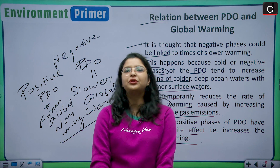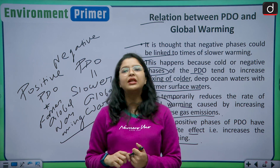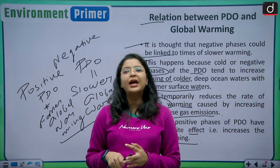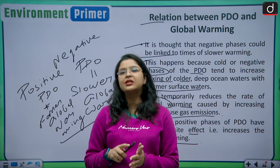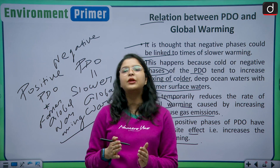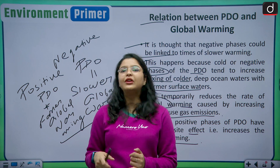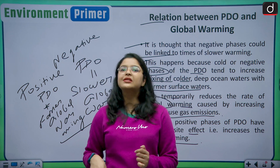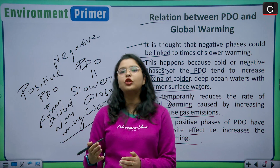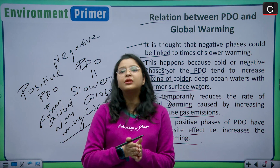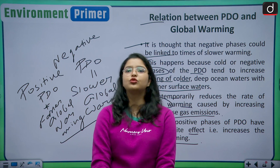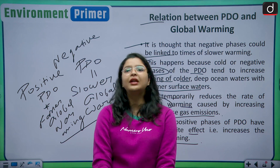With this we come to the conclusion of today's discussion. We have seen the phenomenon of the Pacific Decadal Oscillation, its two phases — cooler and warmer — the relationship between ENSO and PDO, the relation of PDO with global warming, and how the two phases of PDO impact global warming and the monsoons.